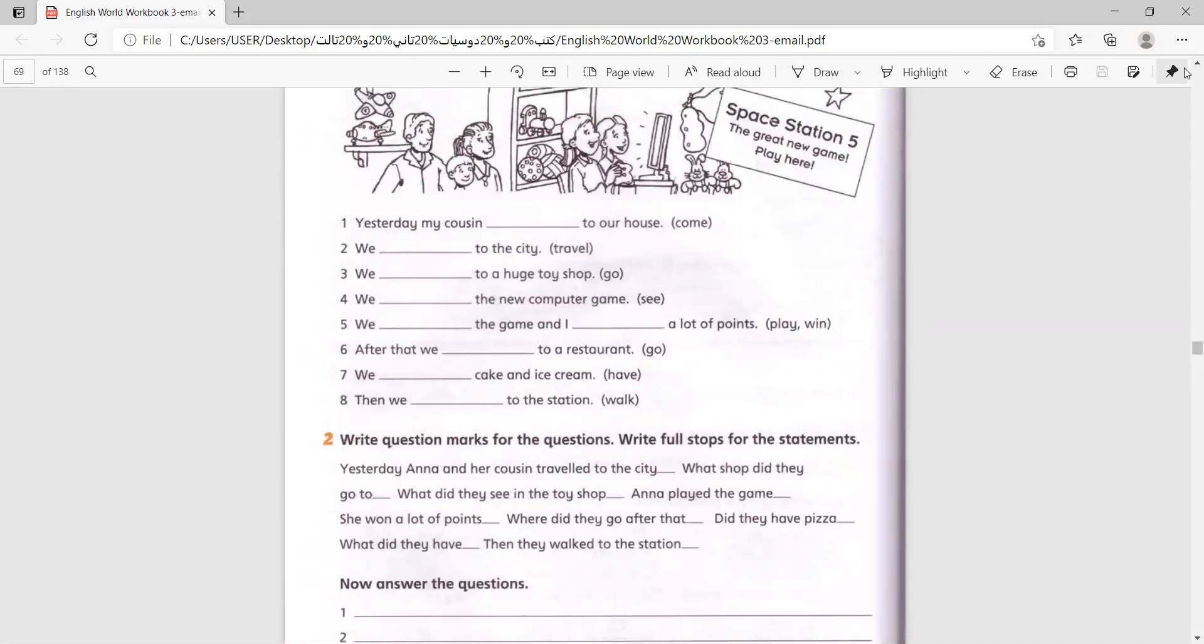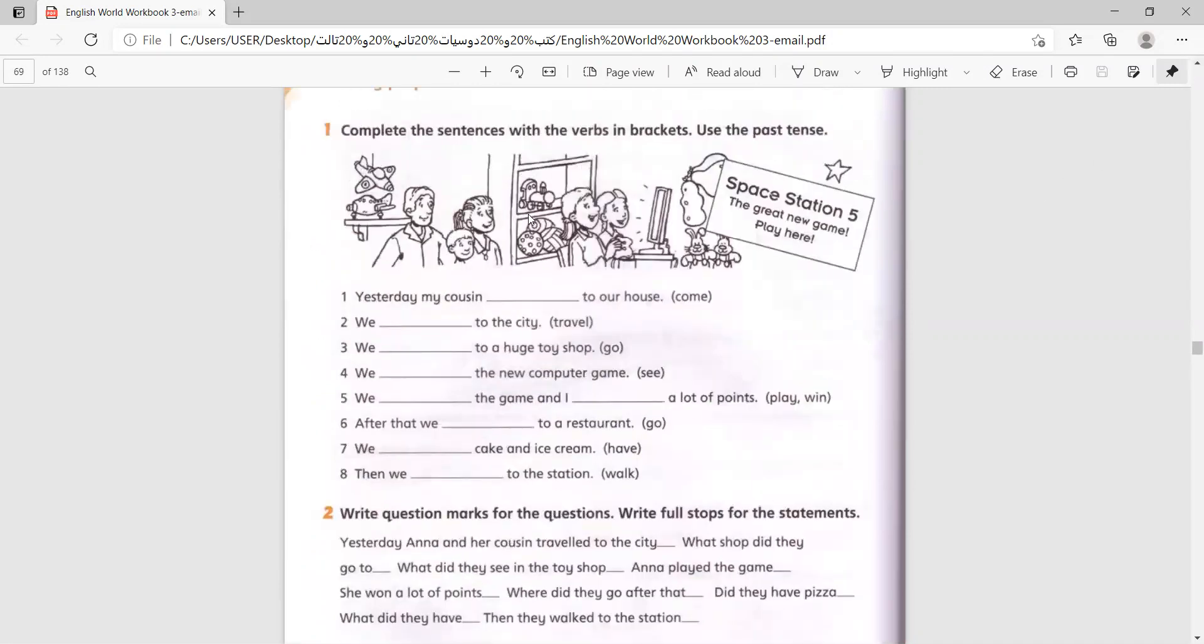Let's complete the sentences by writing the past verbs of the verbs in the brackets. Complete the sentences with the verbs in the brackets. Use past tense. Yesterday, my cousin blanked to our house. So, between the brackets, come, came.